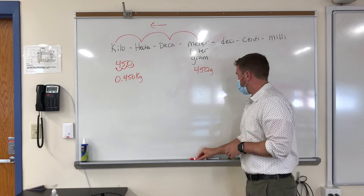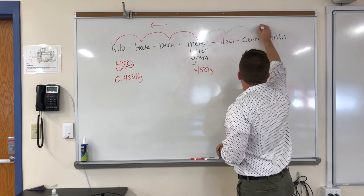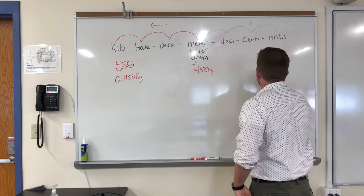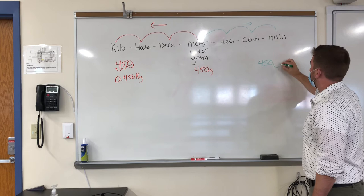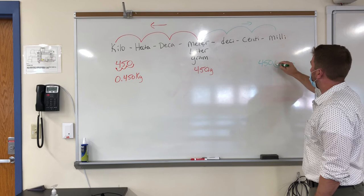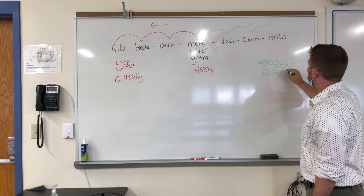Same thing if I want to go the other way. Starting with 450 grams again and going all the way to milli — that's three places to the right. So take my 450 decimal point and go one, two, three places to the right. Remember, anywhere there's a gap, put a zero in. So I have 450,000 milligrams.